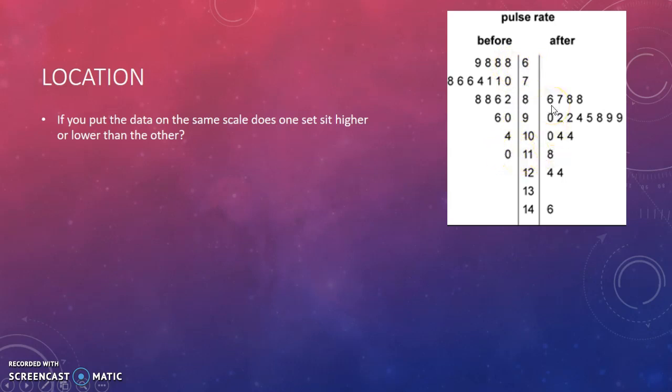Whereas just after exercise, the heart rate sits between 86 beats per minute and 146 beats per minute. So the location of one set of the data is much lower, this set, than the location of the second set of data, which is this set.